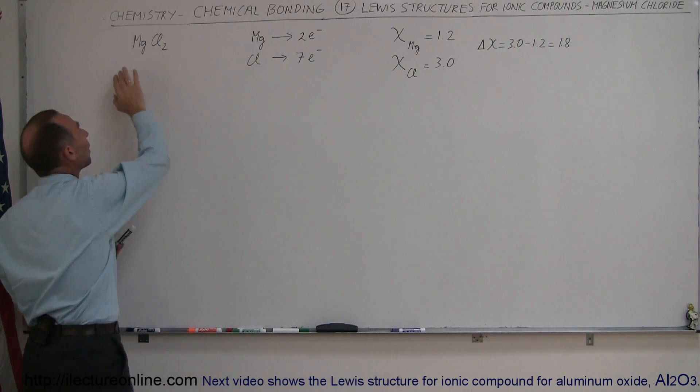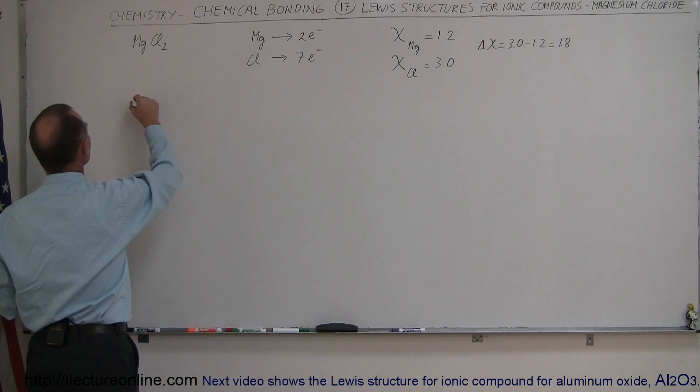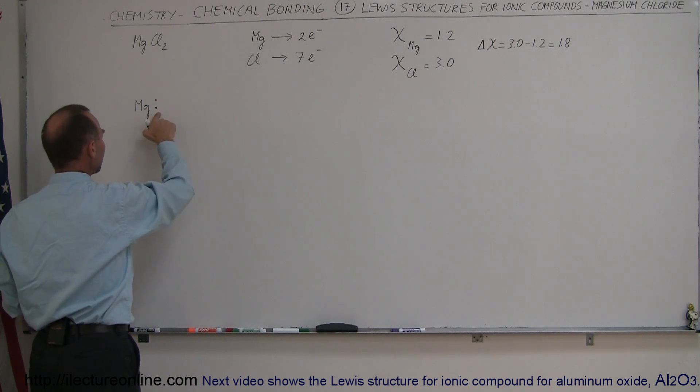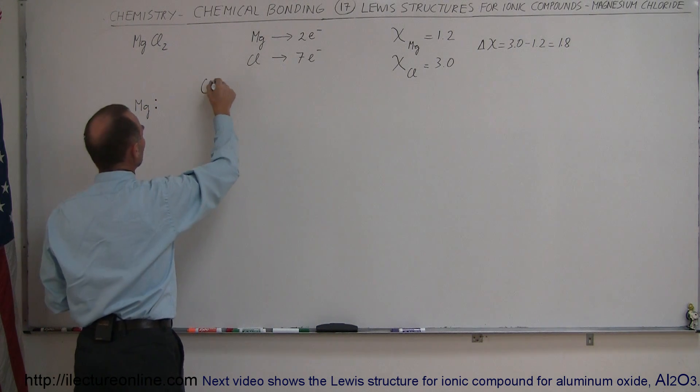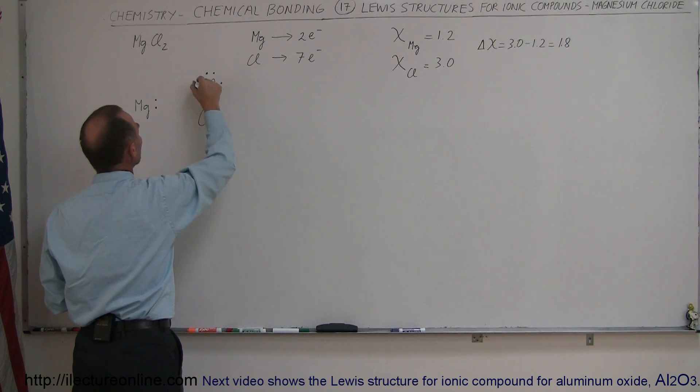That's why there's two chlorines and one magnesium for that transfer to take place. So in the case of magnesium, which starts out with two valence electrons, and then we have two chlorine atoms, each with seven valence electrons, which means there's room for one more.